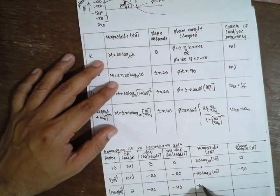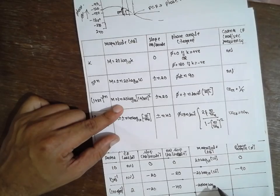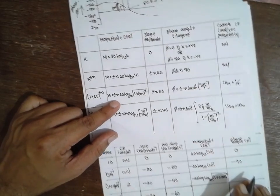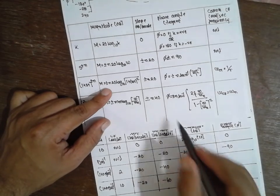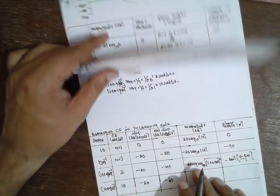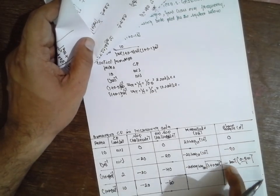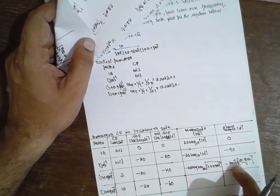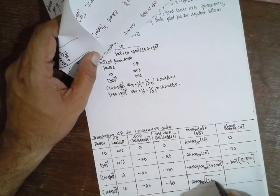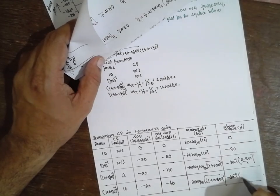Next, the magnitude contribution of (1 + 0.5jω)^{-1} is minus 20 log₁₀ of √(1 + (0.5ω)²), with phase angle minus tan⁻¹(0.5ω/1) — negative because it lies in the denominator. Similarly, the last factor (1 + 0.1jω)^{-1} contributes minus 20 log₁₀ √(1 + (0.1ω)²) and phase angle minus tan⁻¹(0.1ω/1).